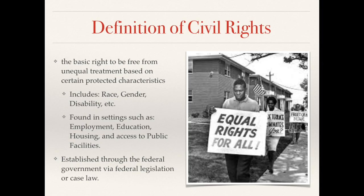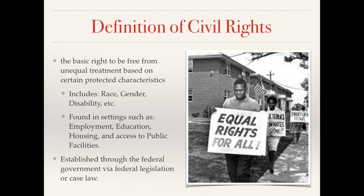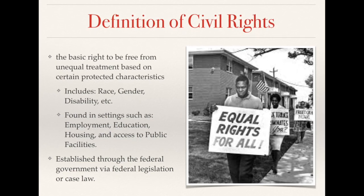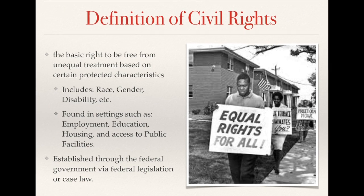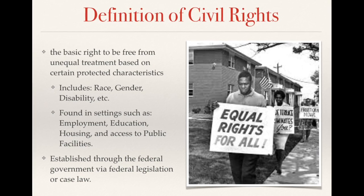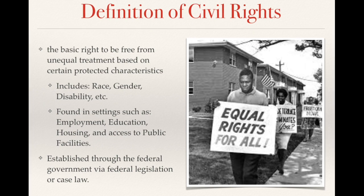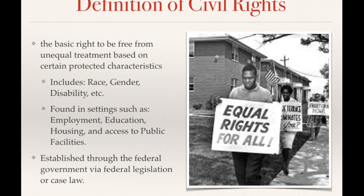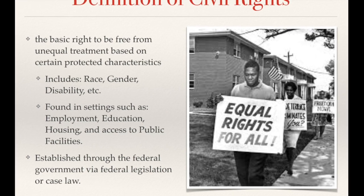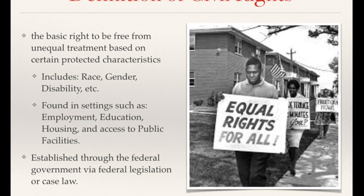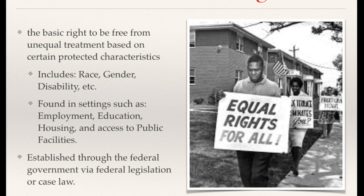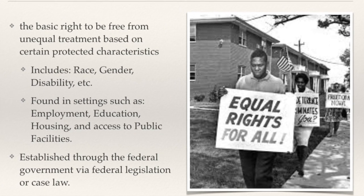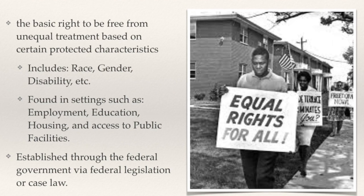Civil rights concern the basic rights to be free from unequal treatment based on certain protected characteristics, such as race, gender, and disability, in settings such as employment, education, housing, and access to public facilities. A civil rights violation occurs in designated situations where an individual is discriminated against on the basis of a protected characteristic. Most civil rights laws are established through the federal government via federal legislation or case law.